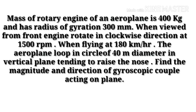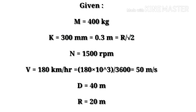From the given data, the mass of the engine m = 400 kg. The radius of gyration is 300 mm, which converts to 0.3 m. Note that if the radius of gyration is not given, there is a formula: r divided by root 2. The engine is viewed from the front rotating clockwise, and n = 1500 rpm.